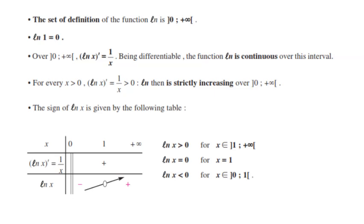Ln is a continuous function over this interval. For every positive x, the derivative of ln(x) is also positive, so ln is a strictly increasing function over 0 to plus infinity. The sign of ln(x) is given by the following table: ln(x) is positive for x in (1, +∞), equals 0 at x = 1, and is negative between 0 and 1.